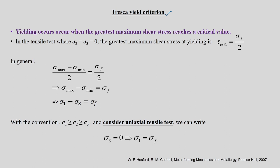The statement of the Tresca yield criterion is: yielding occurs when the greatest maximum shear stress reaches a critical value. In the previous section we saw tau_1, tau_2, tau_3. Whenever the greatest one reaches a critical value, we say that yielding occurs as per this criterion.